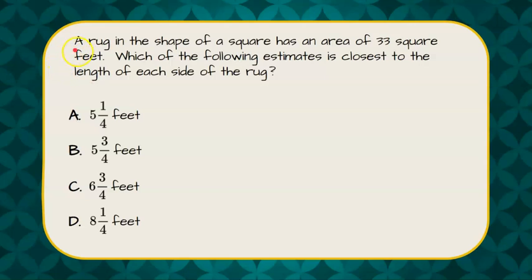Our question states: a rug in the shape of a square has an area of 33 square feet. Which of the following estimates is closest to the length of each side of the rug?